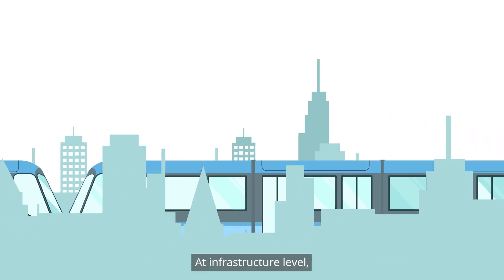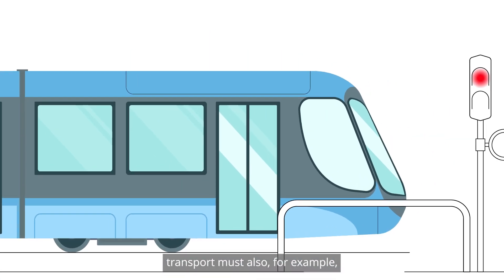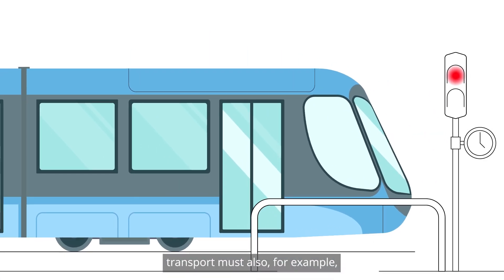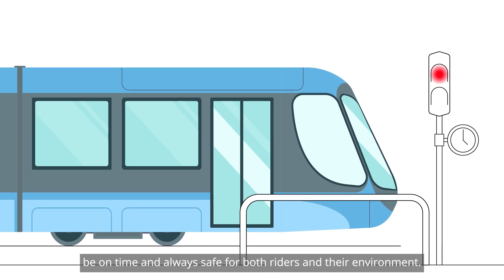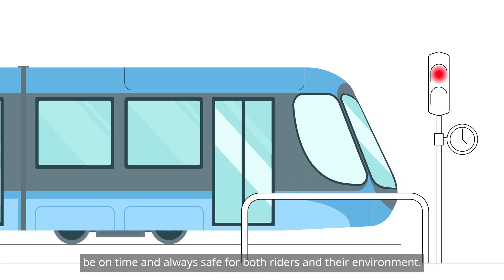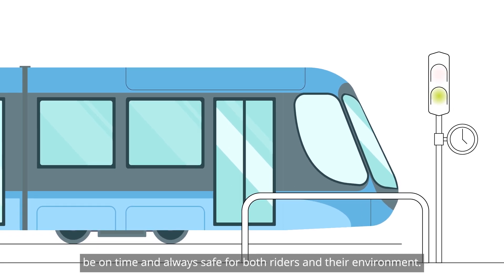And these are not the only conditions to be verified and met for an optimal journey. At infrastructure level, transport must also, for example, be on time, and always safe for both riders and their environment.